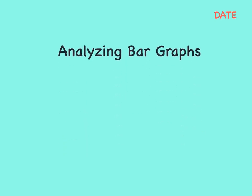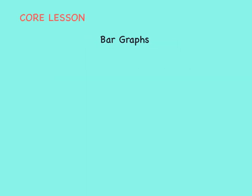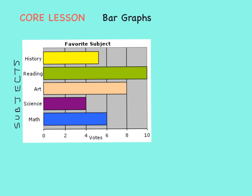Analyzing bar graphs. How can we analyze data from a bar graph? A bar graph is a visual representation of data. This is a bar graph that shows kids' favorite subjects. As you can see, some kids like history, some kids like reading, art, science, and math. But what if we want to know how many kids like each subject? The bar graph tells us this.